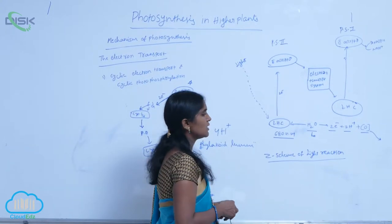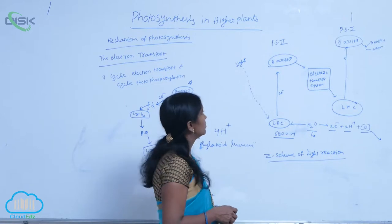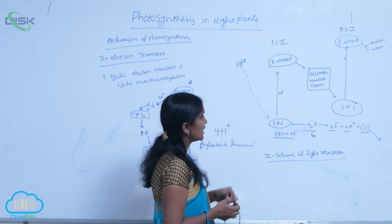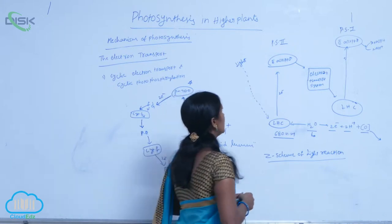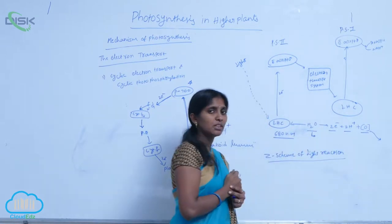In this scheme, the electrons are transmitted from PS2 to electron acceptors through upstream transportation and downstream transportation to the PS1 reaction center.